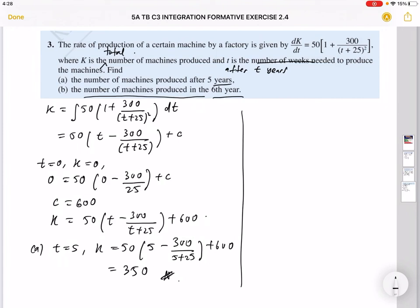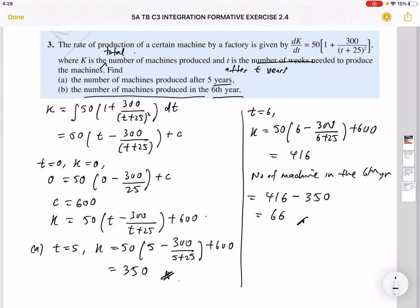Now for part b, they say number of machines produced in the sixth year. To find the number of machines produced in the sixth year, you have to find total number of machines produced after six years minus total number of machines produced after five years. So we first sub t with 6: k equals 50(6 - 300/(6 + 25)) plus 600. Now if you calculate this, you get 416.1. So we just drop the point one because number of machines cannot have decimal, so it's just 416. So number of machines produced in the sixth year, you need to take the total machines produced in the first six years minus total machines produced in the first five years, and you get 66.